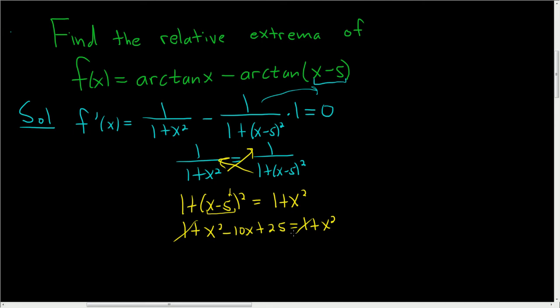This cancels by subtracting 1. You can subtract x squared. Maybe add the 10x, or I'll do it in two steps. Negative 10x plus 25 equals 0. Add the 10x. Divide by 10. So this is 5 halves, which is 2.5.